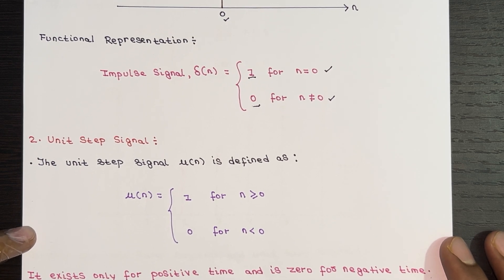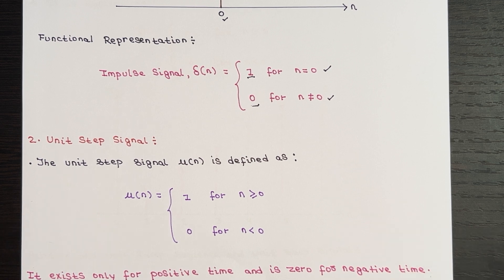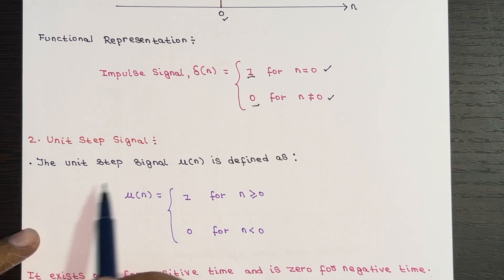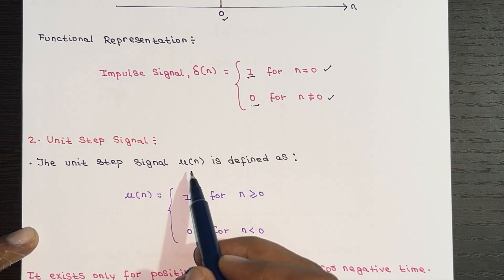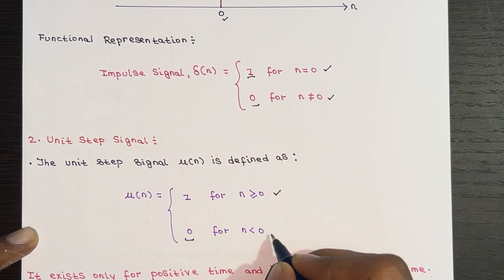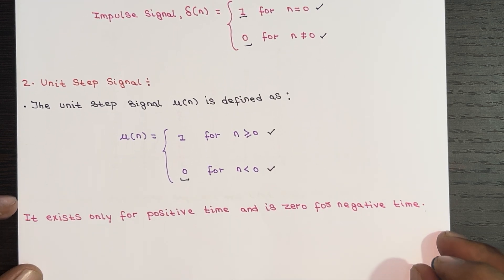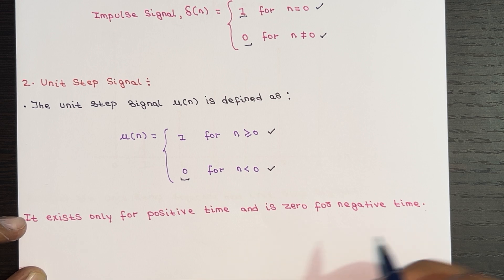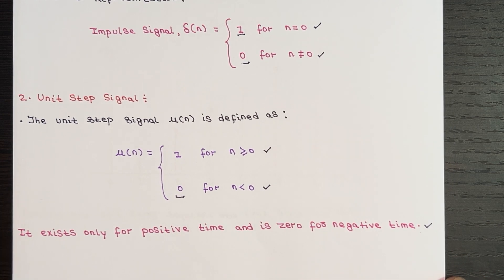Now let's talk about the unit step signal. This signal is super important for analyzing many discrete time systems. Basically, it's a signal that only exists for positive time and is zero for negative time. It is equivalent to applying a signal whose amplitude suddenly changes and remains constant at the sampling instance forever after application; in between the discrete instances it is zero. The unit step signal, denoted as u(n), is defined as: u(n) equals one for n greater than or equal to zero, and zero for n less than zero.